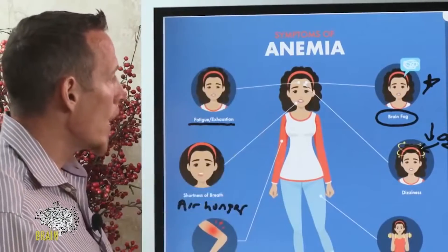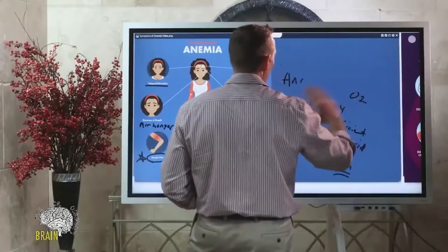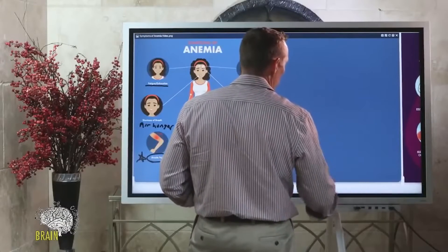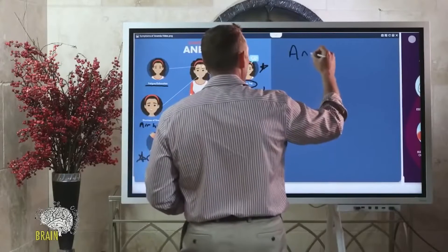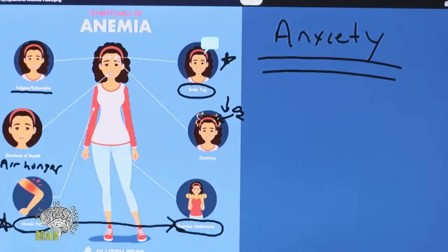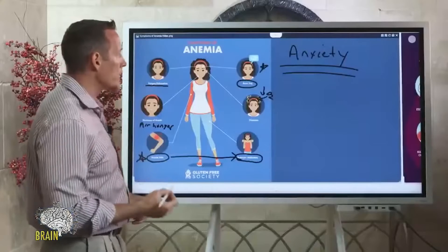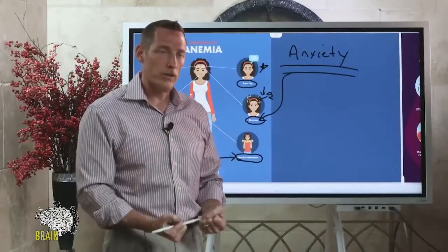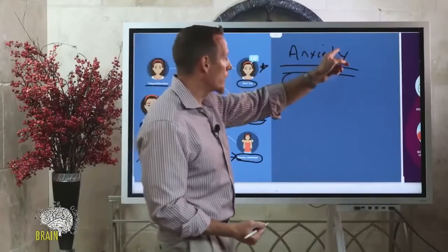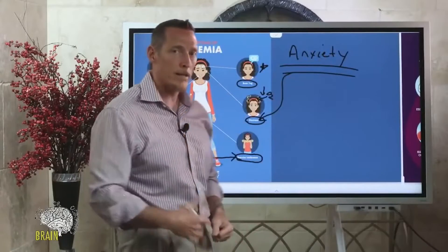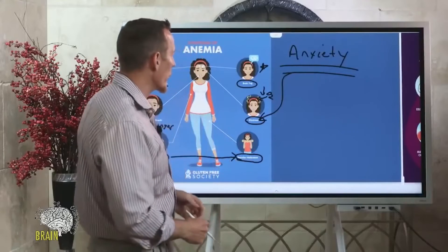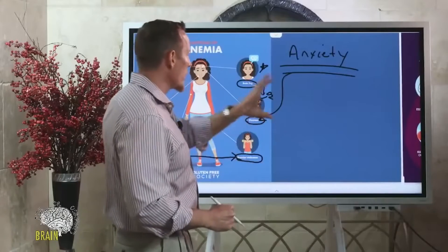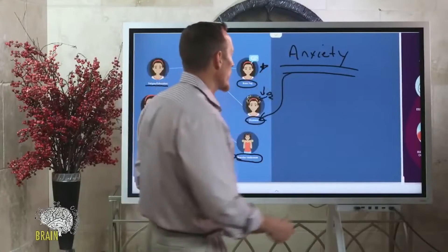Anxiety is another very common symptom of anemia that often gets overlooked. When the brain doesn't get enough oxygen, it can produce anxiety — tied to the same mechanism as dizziness. If you haven't been an anxious person your whole life and suddenly you're anxious and can't talk yourself down, you might be anemic. Ask your doctor to rule out anemia and request the appropriate blood work — we'll cover that shortly.